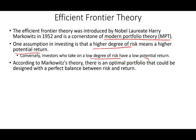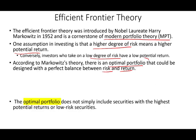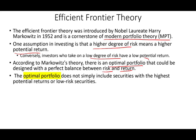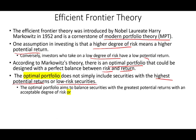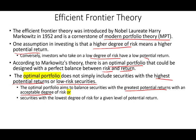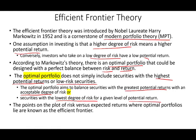According to the efficient frontier theory, there is an optimal portfolio that can be designated with a perfect balance between risk and return. The optimal portfolio does not simply include securities with the highest potential return or the lowest risk. Instead, it aims to balance securities with the greatest return for an acceptable level of risk — or securities with the lowest risk for a given level of return.